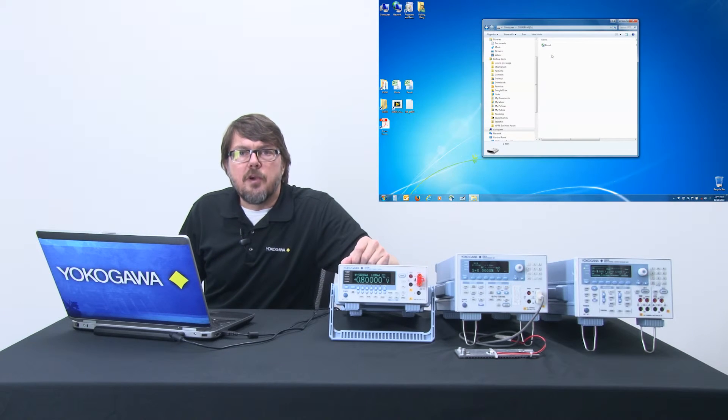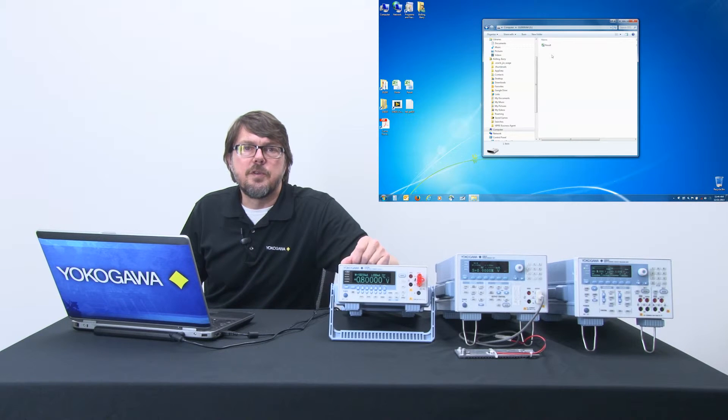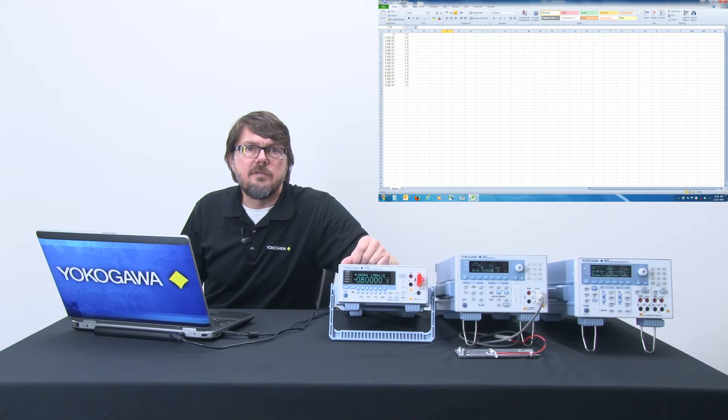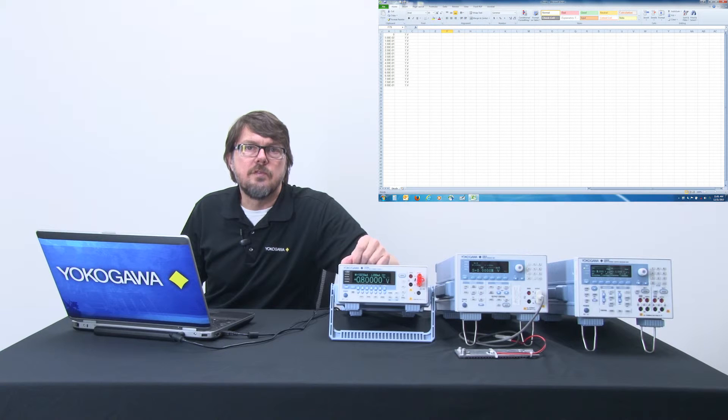First, I load the program, which is nothing more than a CSV file containing a list of voltage values that we want the SMU to play back. Here is the CSV file opened within Excel. Three columns, each has value, range, and source type, either a voltage source or a current source. It is that simple.